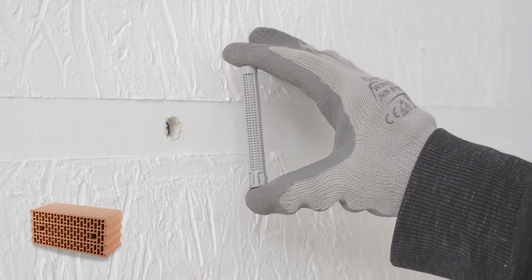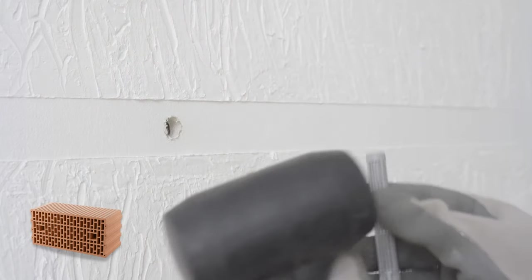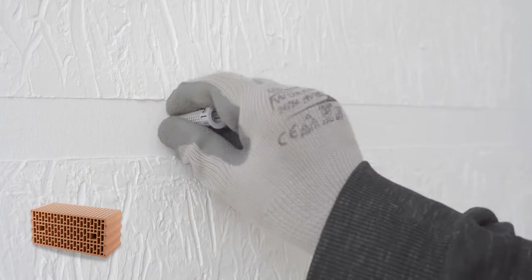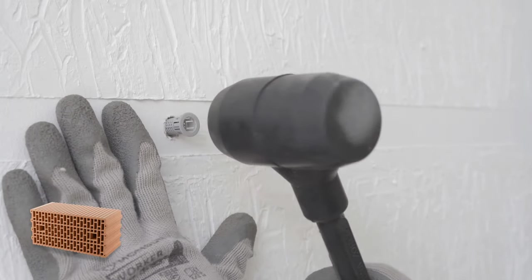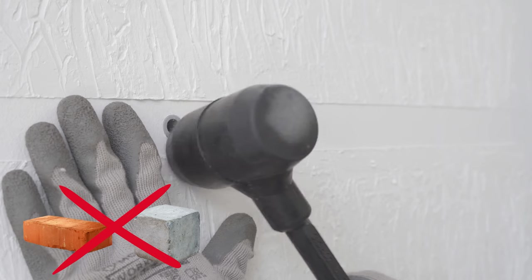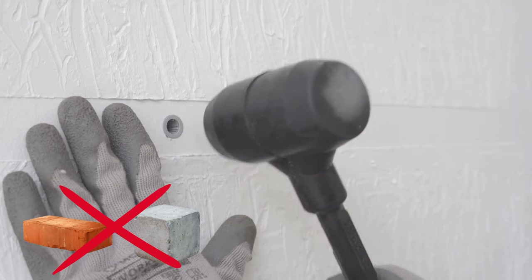In our case, because of the air chambers in the brick, we also have to insert an injection anchor sleeve. This sleeve prevents the mortar from being wasted in the air chambers. By the way, for concrete and solid brick, you should not use an anchor sleeve.